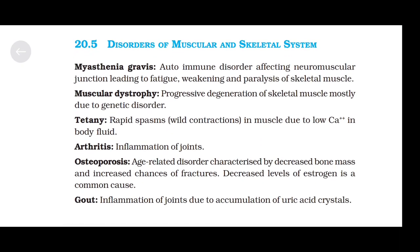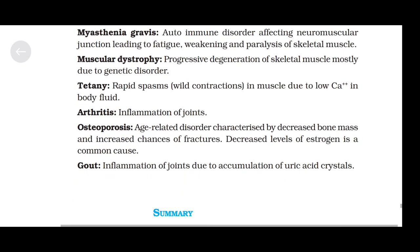Disorders of muscular and skeletal system. Myasthenia gravis is an autoimmune disorder affecting the neuromuscular junction, leading to fatigue, weakening, and paralysis of skeletal muscle. Muscular dystrophy is a progressive degeneration of skeletal muscle, mostly due to a genetic disorder. Tetany refers to rapid spasms and wild contractions in muscles due to low calcium ion levels in body fluid. Arthritis is the inflammation of joints. Osteoporosis is an age-related disorder characterized by decreased bone mass and increased chances of fractures; decreased levels of estrogen is a common cause. Gout is the inflammation of joints due to accumulation of uric acid crystals.